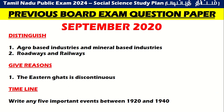So, distinguish: agro-based industries and mineral-based industries, then roadways and railways. You will be able to learn the revision part — agro-based industries and mineral-based industries, roadways and railways. You will learn the distinguishing part, and then give reasons.